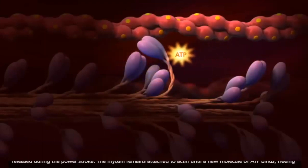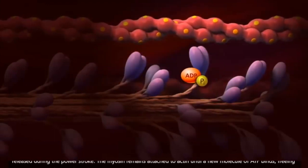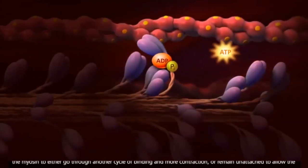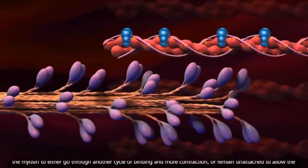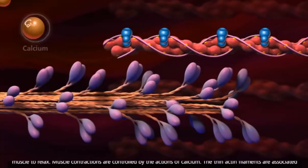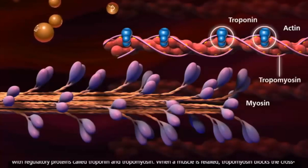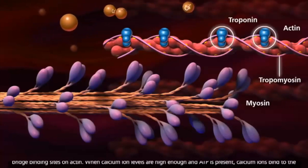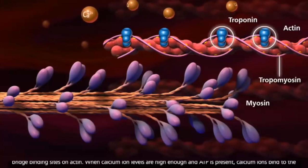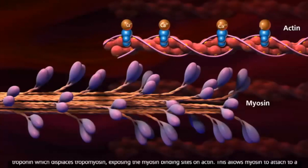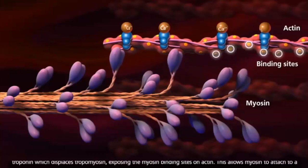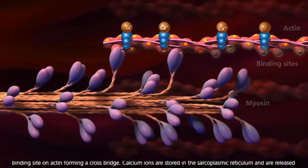The myosin remains attached to actin until a new molecule of ATP binds, freeing the myosin to either go through another cycle of binding and more contraction, or remain unattached to allow the muscle to relax. Muscle contractions are controlled by the actions of calcium. The thin actin filaments are associated with regulatory proteins called troponin and tropomyosin. When the muscle is relaxed, tropomyosin blocks the cross bridge binding sites on actin. When calcium ion levels are high enough and ATP is present, calcium ions bind to the troponin, which displaces tropomyosin, exposing the myosin binding sites on actin. This allows myosin to attach to a binding site on actin, forming a cross bridge.